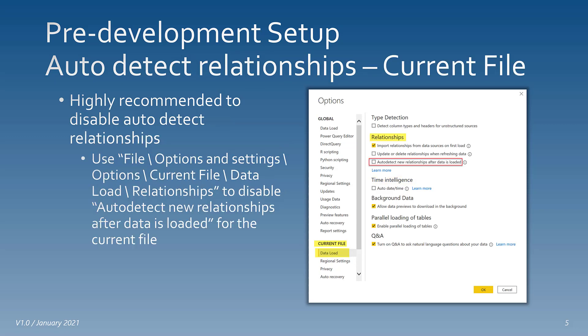The next thing I'd like to talk about is it's highly recommended to disable auto detect relationships. You can use File > Options and Settings > Options > Current File > Data Load, in the relationship section, and disable auto detect new relationships after the data is loaded. Highly recommended.